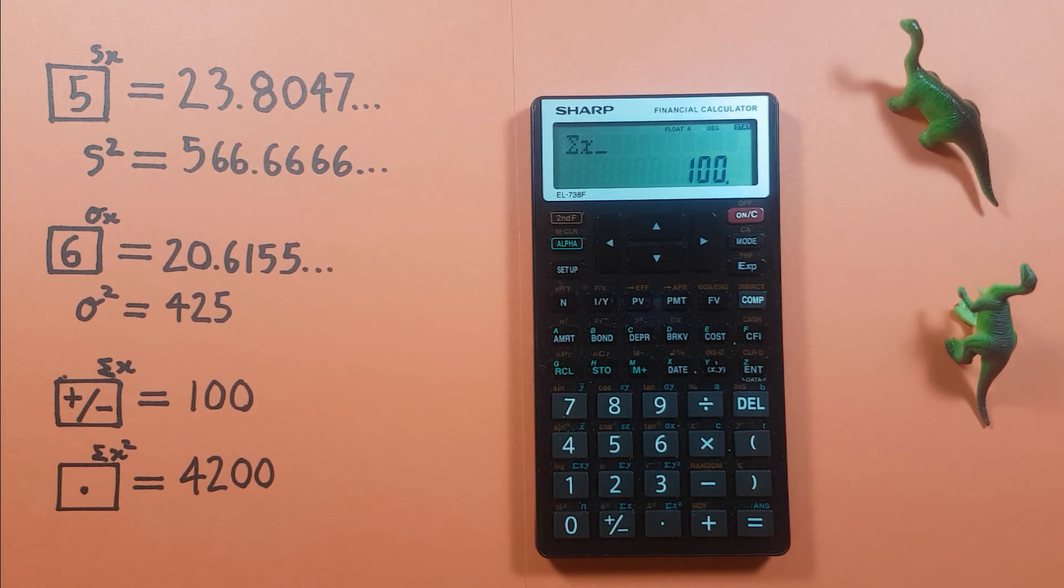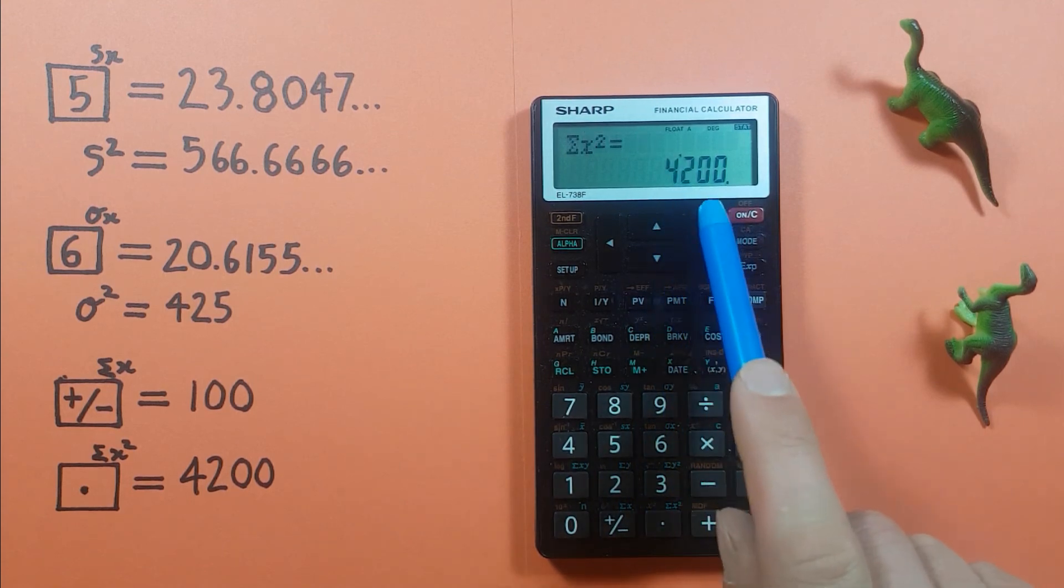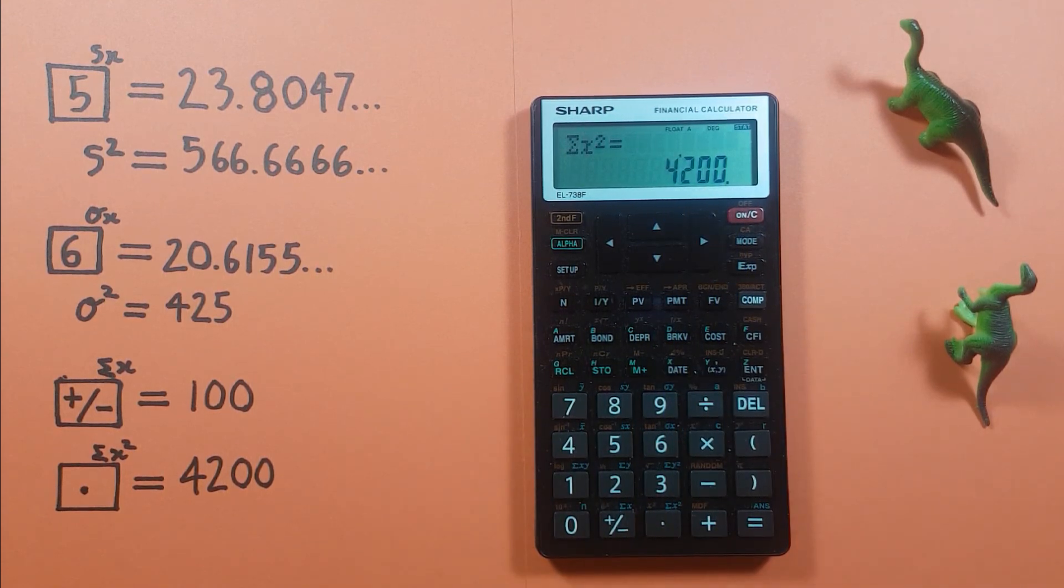And finally we can get a sum of squares of our data set with the recall period key and we see we get a sum of squares of 4200.